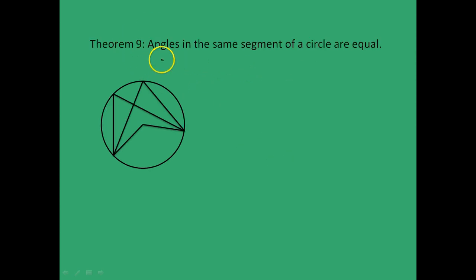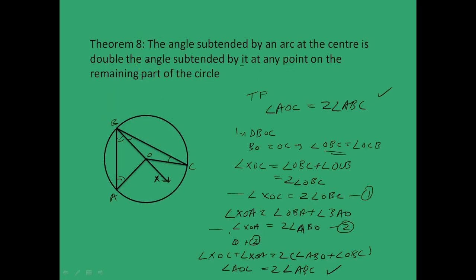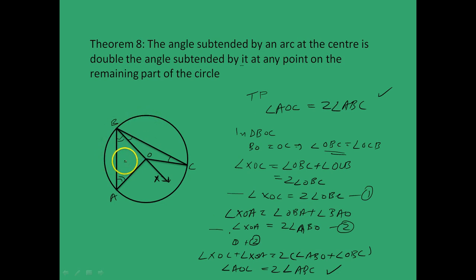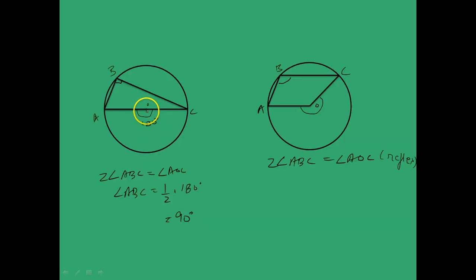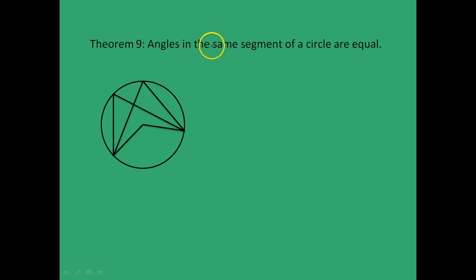Theorem 9: angles in the same segment of a circle are equal. You should have a sense of this from Theorem 8, which said the angle subtended by an arc at the center is double the angle at any point on the remaining part — without specifying which point. So it is intuitive that all such points give equal angles.